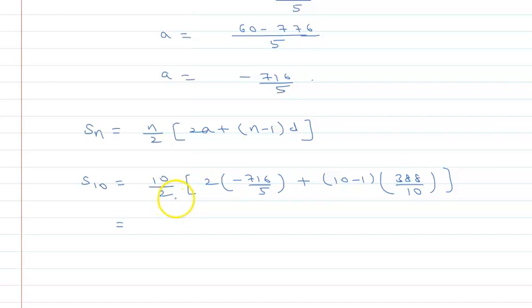Into 2a, that is minus 716 divided by 5, plus 10 minus 1 into d, that is 388 by 10. This becomes 10 upon 2. If I take 2 common from the whole expression, this is 10 upon 2, 2 common. So this is a, and 388 divided by 2 gives 194. So 2 cancel from 2.